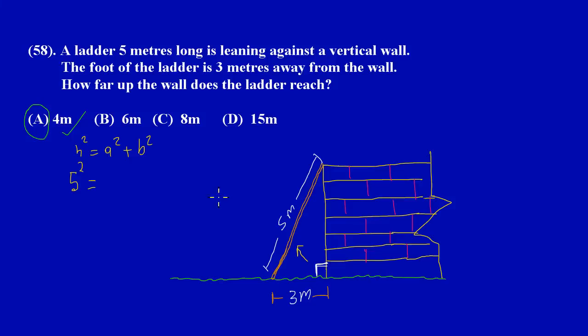5² is really 25 and this is equal to 3² which is 3 × 3 = 9, plus b². By transposition I could take the 9 across - since it's positive here when it goes across the equal sign it will become negative 9. So I have 25 - 9 = b².